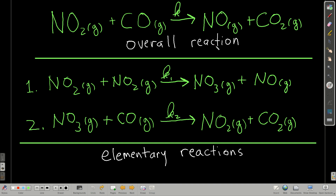For example, this reaction — the reaction between nitrogen dioxide and carbon monoxide to make nitrogen monoxide and carbon dioxide — is the overall reaction. It might seem like a carbon monoxide molecule is bumping into a nitrogen dioxide molecule and pulling off an oxygen atom. But it actually happens by a two-step process. In the first step, two nitrogen dioxide molecules collide to make nitrogen trioxide and nitrogen monoxide, and then the nitrogen trioxide reacts with carbon monoxide to make nitrogen dioxide and carbon dioxide. This is experimentally determined to be the mechanism.